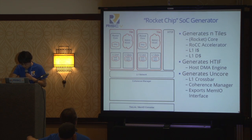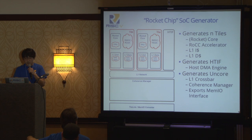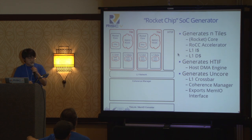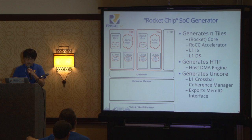Let's look at some block diagrams. This is what the rocket chip SOC generator generates logically. It generates an arbitrary number of tiles, which currently consist of a rocket core with or without a floating point unit, a ROC accelerator — ROC stands for Rocket Custom Co-Processor — so you can instantiate your own favorite accelerator. You can also generate an L1 instruction cache and a non-blocking L1 data cache. It also generates the HTIF block, which is essentially a host DMA engine where the host can put in reads and writes to the target memory without CPU intervention. It also generates the UnCore, including the L1 crossbar, coherence manager, and converters to simplify the memory IO.